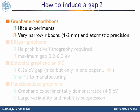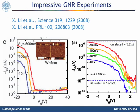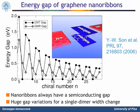Let's consider nanoribbons. There are very beautiful experiments available. I'm showing here some impressive transfer characteristics obtained at room temperature by the group of Dai at Stanford from back-gated nanoribbons narrower than 10 nanometers. I think you can appreciate the excellent current modulation of up to six orders of magnitude. Armchair nanoribbons always have a semiconducting gap, which represents an important advantage with respect to carbon nanotubes.